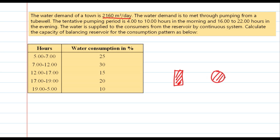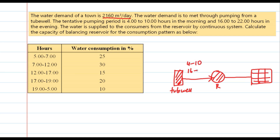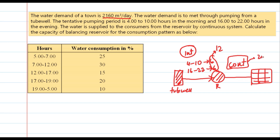Water is supplied to the consumers from the reservoir by a continuous system. Here is the reservoir and water is supplied by continuous system to the consumers — this is the distribution system. So if this is the reservoir and this is the source, the pumping period to the reservoir is 4 to 10 and 16 to 22, so 6 hours and 6 hours — total 12 hours. The supply to consumers is continuous, while pumping is intermittent over 24 hours.